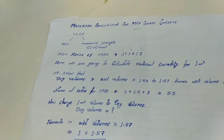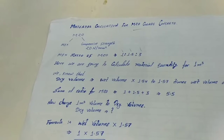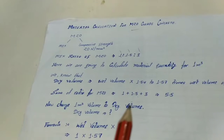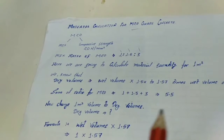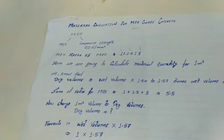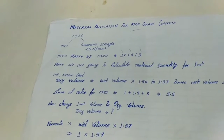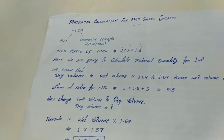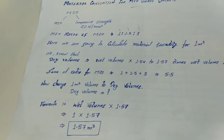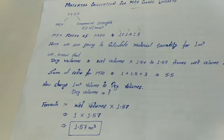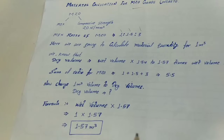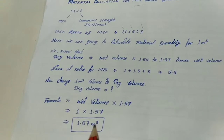Now the sum of ratios of M20 is 1 + 1.5 + 3 = 5.5. We convert 1 cubic metre wet volume to dry volume using the formula: dry volume = wet volume × 1.57. So dry volume = 1.57 cubic metres.